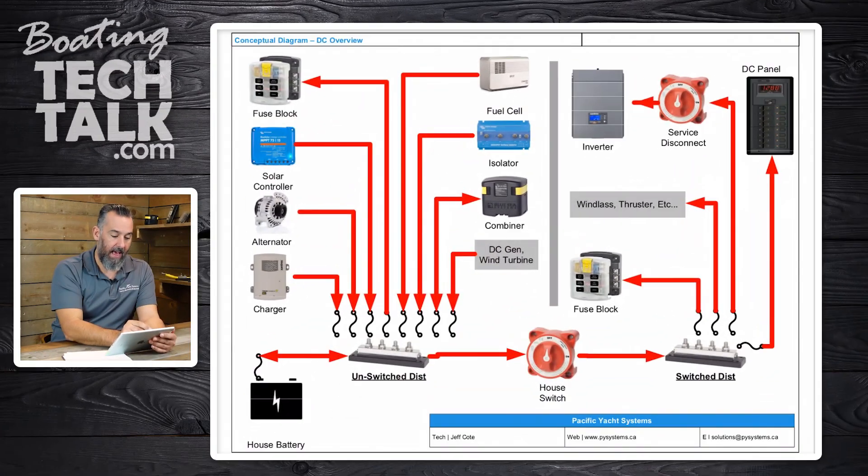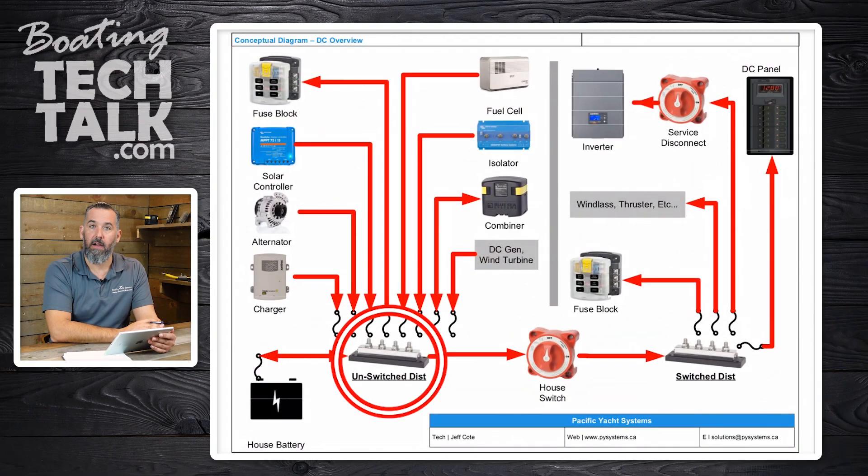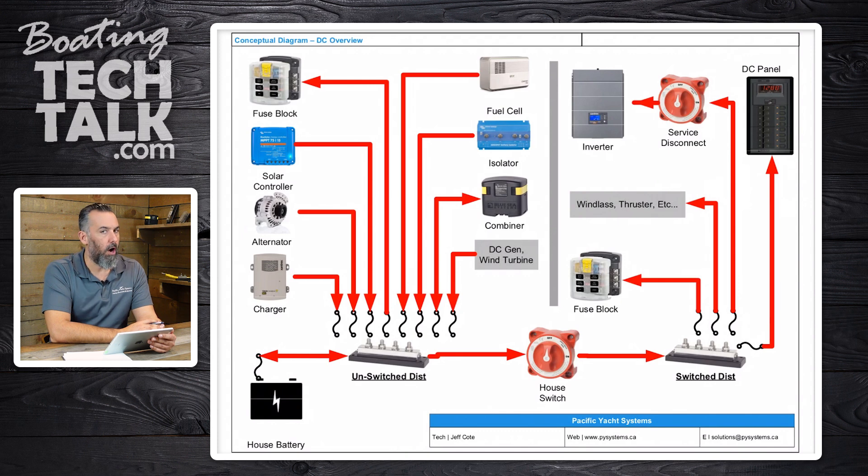A bilge pump. A bilge pump should work regardless of whether your battery switch is on or off. What's another thing? A carbon monoxide detector — that device has to be on all the time. So there are certain things that should always be connected to a battery. Stereo memory is another example, and it's actually right here in that fuse block. It's called unswitched distribution — always on, regardless of what you do to that battery switch.